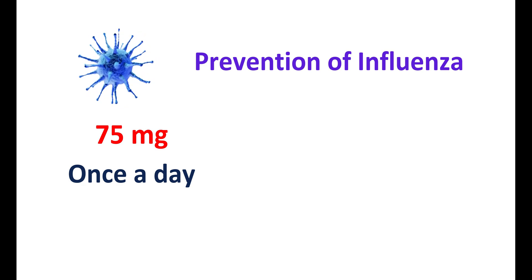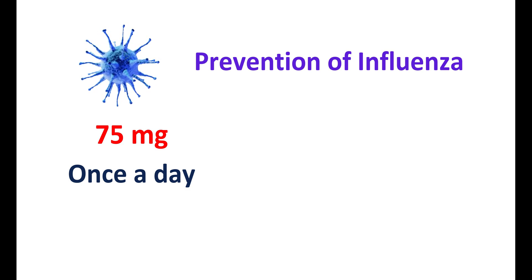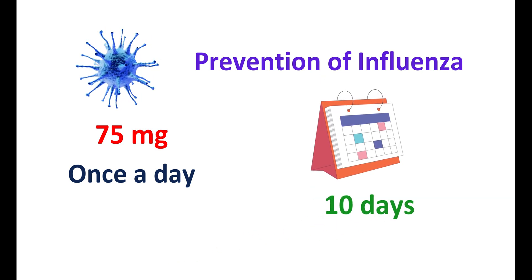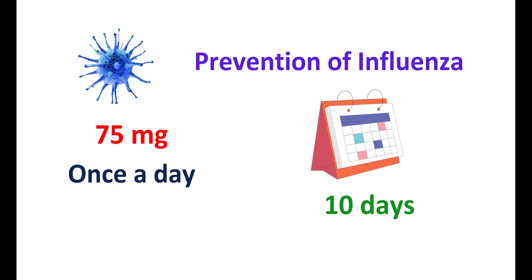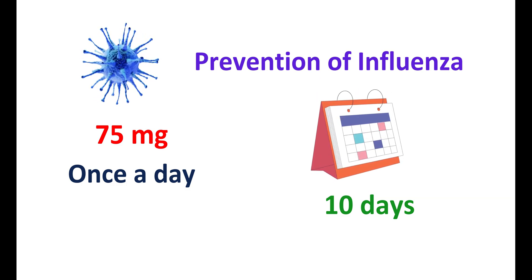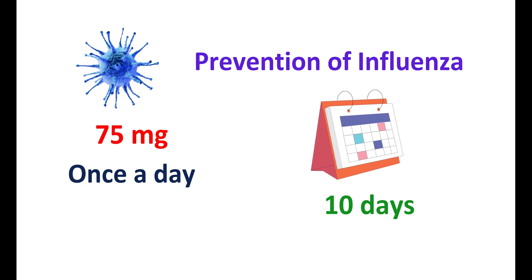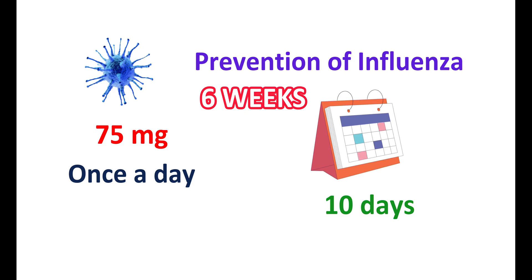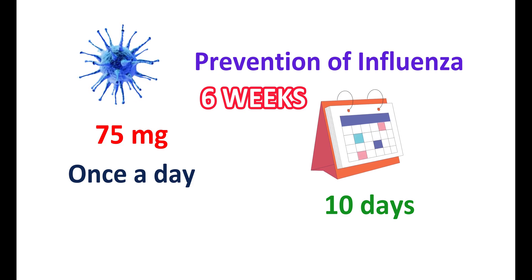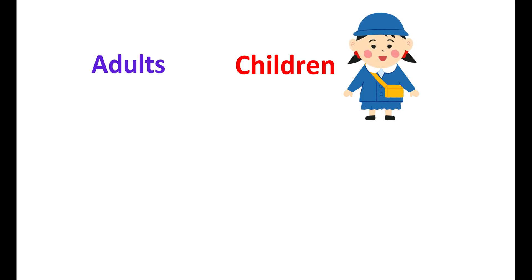For prophylaxis, oseltamivir can be given for up to 10 days. This duration may be modified based on the prophylaxis required. When flu virus attacks a community and affects many people, this medication may be given for up to six weeks to better control the infection. Oseltamivir can be given to both adults and children. In children, the dose depends on body weight as well as age.